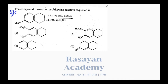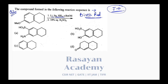Moving on to question number 2, also from the June 2013 exam. The compound formed in the following reaction sequence is asked. You look at this molecule — a benzene ring fused to a cyclohexane ring — and you see lithium in liquid ammonia. This combination is used for Birch reduction of organic molecules.